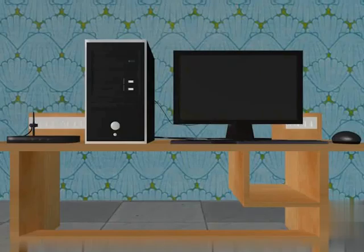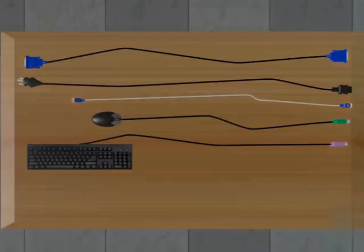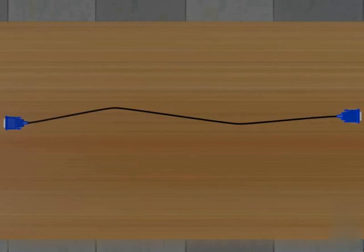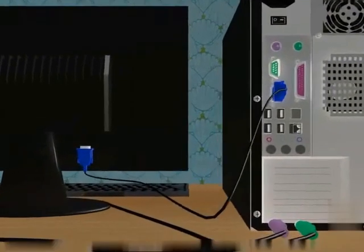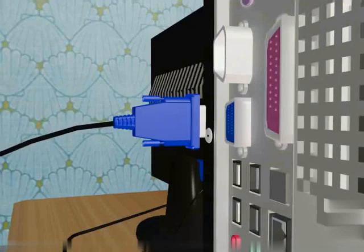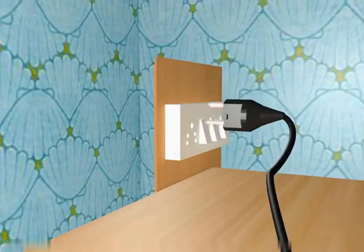Now let's learn how to connect the various components to the CPU. Place all the components on the table as shown. Place all the cables on the table as shown. First, let's connect the monitor to the CPU. Connect the power cable to the monitor as shown. Now connect the other end to a power supply socket.